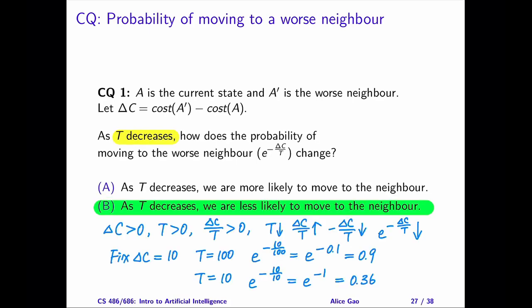Let me solve the first question mathematically. The cost difference delta C is positive, and the temperature T is positive. Therefore, the fraction delta C divided by T is positive. As T decreases, the fraction increases. Then the exponent, which is the negative of the fraction, becomes more negative and decreases.